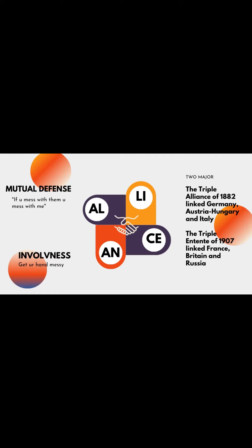First, we have alliances. Basically, there were two main alliances: the Triple Alliance between Germany, Austria-Hungary, and Italy, and then the Triple Entente between France, Britain, and Russia. There were a few other countries in each alliance, but these are the major ones. What an alliance meant is that they were going to defend each other in case of war. So that's why alliances were so important — if one country got attacked, all the other countries had to get involved to defend them, because that was what their alliance was for.